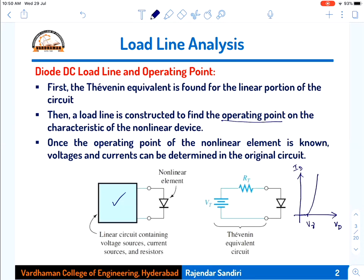The intersection of the load line and the diode characteristic curve is called the operating point or Q point. Once the operating point of the non-linear element is known, you can calculate the voltages and currents from the original circuit. The purpose of load line analysis is to find the DC voltages and currents for the circuit.